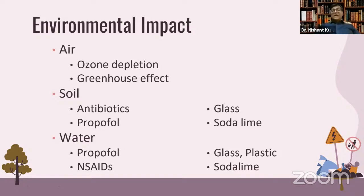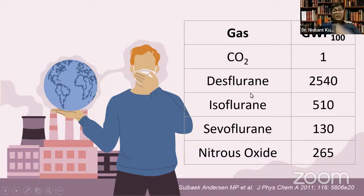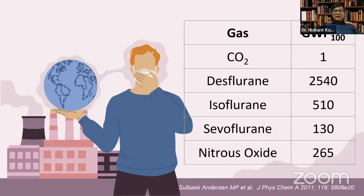When we talk of global warming potential, CO2 is the gold standard at a value of 1 over 100 years. Nitrous oxide is 265 times more potent than CO2. Desflurane has the maximum greenhouse warming potential, while sevoflurane is the least among volatile agents. Even sevoflurane has a global warming potential 130 times that of CO2 over 100 years — a burden that our children will face.